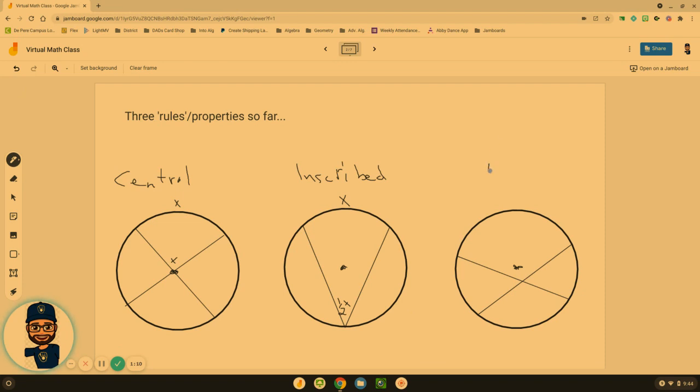Yesterday we learned an interior angle or an inside angle. If this arc over here is x and this arc is y we take the average, so this angle here is going to be x plus y divided by two. So those are the three rules that we have so far hopefully you understand them.